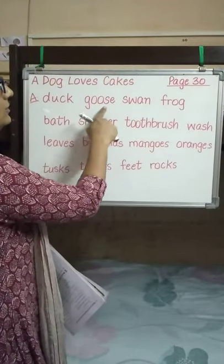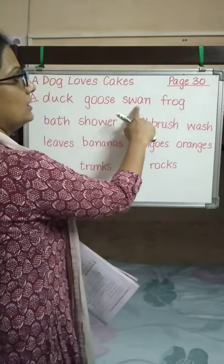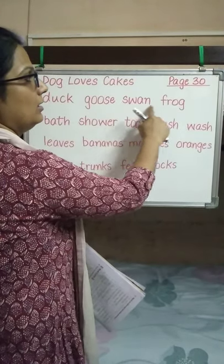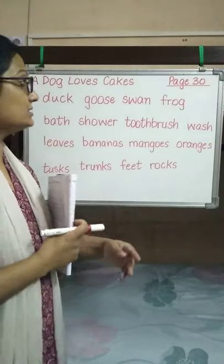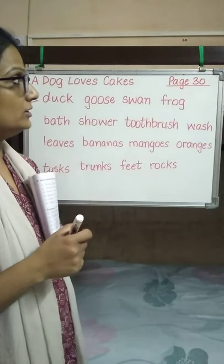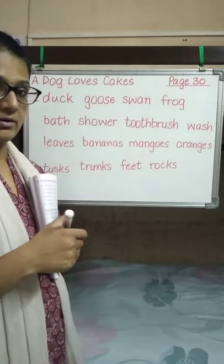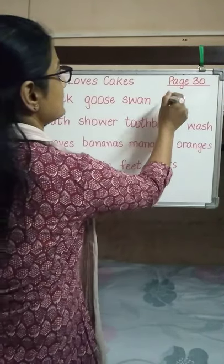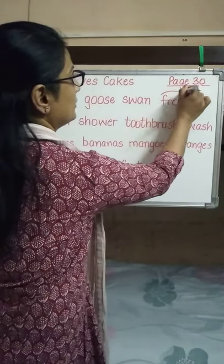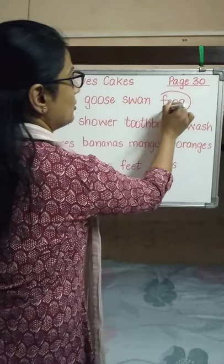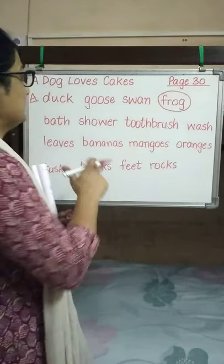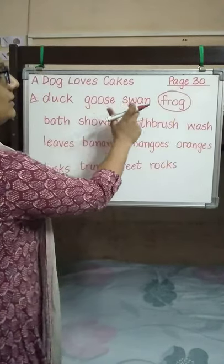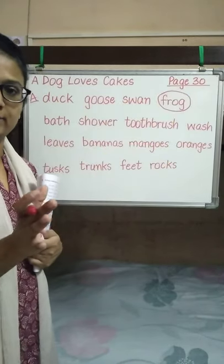Like: duck, goose, swan, frog. What is the odd one out? Frog. Why is frog the odd one out? Because frog can hop, but the others cannot hop.